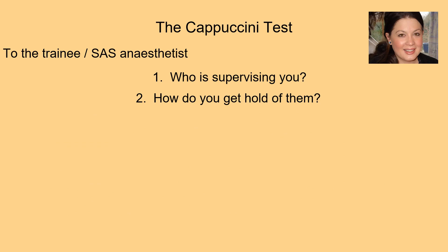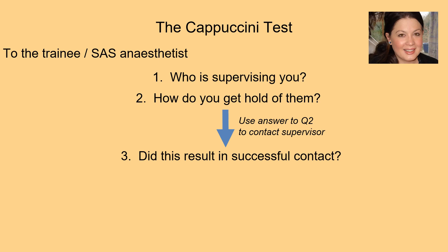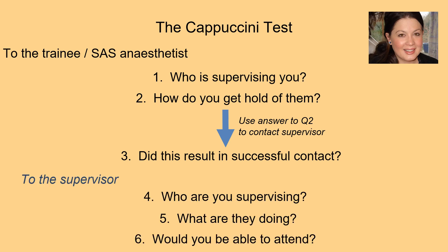These principles led to the development of the so-called Cappuccini test, named after a tragic case with a fatal outcome, used to test supervision arrangements. The Cappuccini test asks five questions. First, we ask the trainee or non-autonomous SAS anaesthetist: who is supervising you, and how do you get hold of them? We then use the answer to question two to make contact with the supervisor and ask: did this result in successful contact? Finally, we ask the supervisor: who are you supervising, what are they doing, and would you be able to attend to provide assistance?